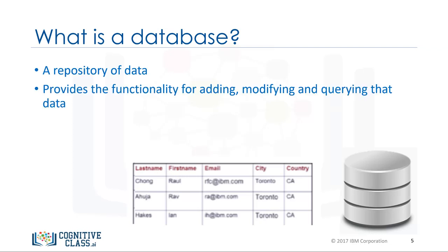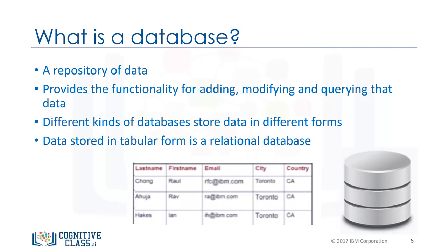A database also provides the functionality for adding, modifying, and querying that data. There are different kinds of databases of different requirements. The data can be stored in various forms. When data is stored in tabular form, the data is organized in tables, like in a spreadsheet, which is columns and rows. That's a relational database.